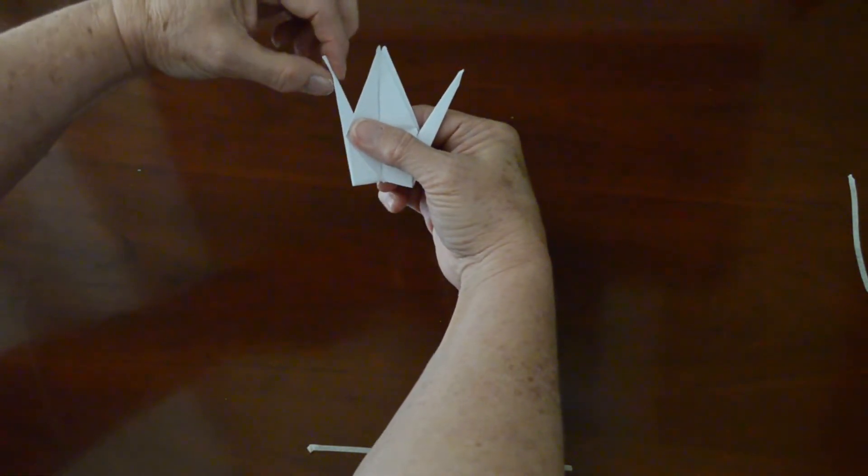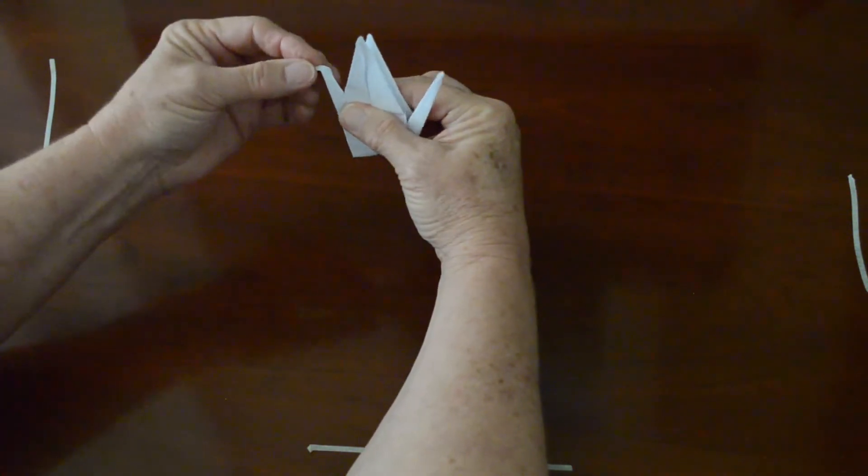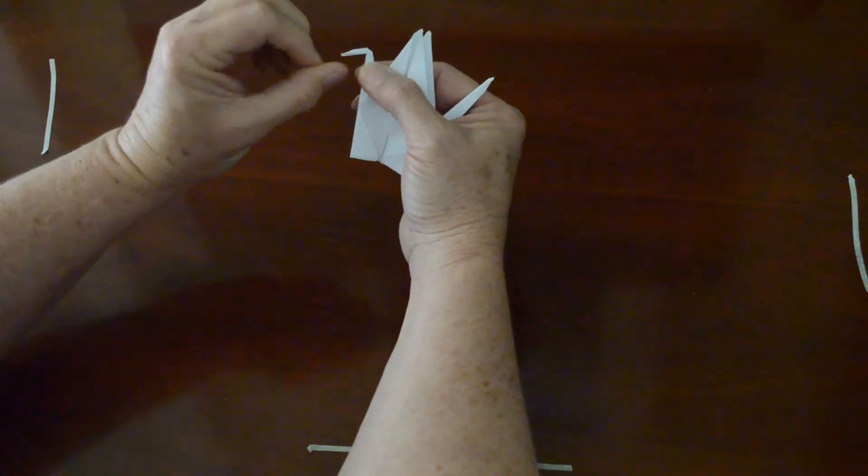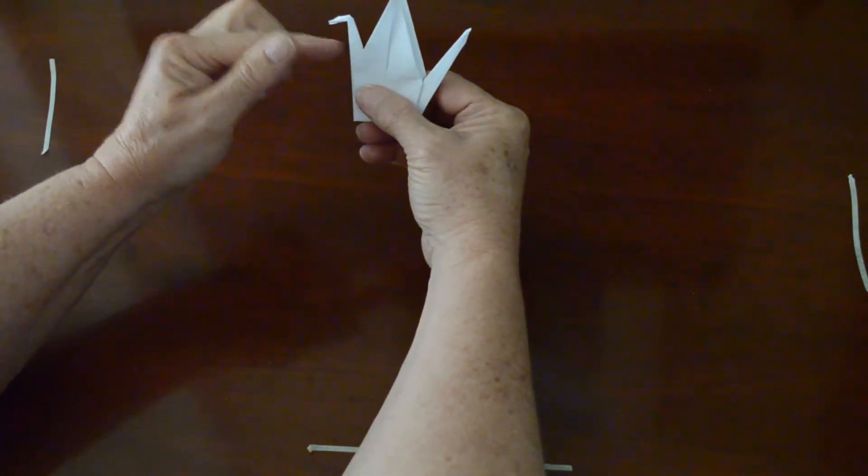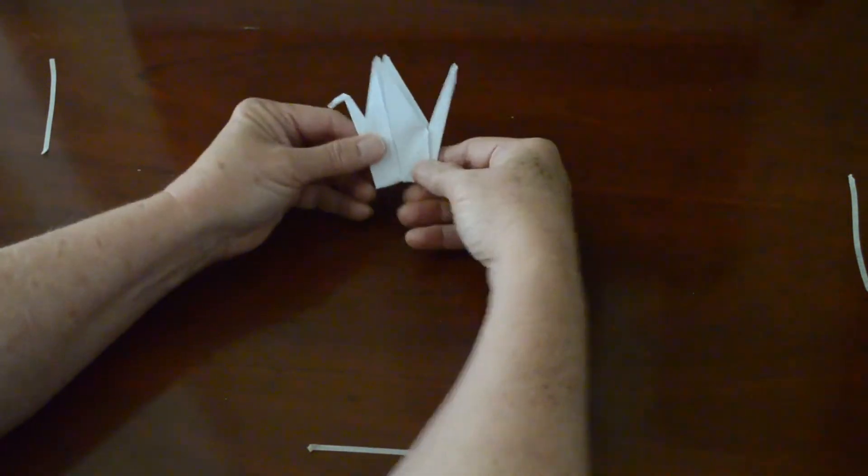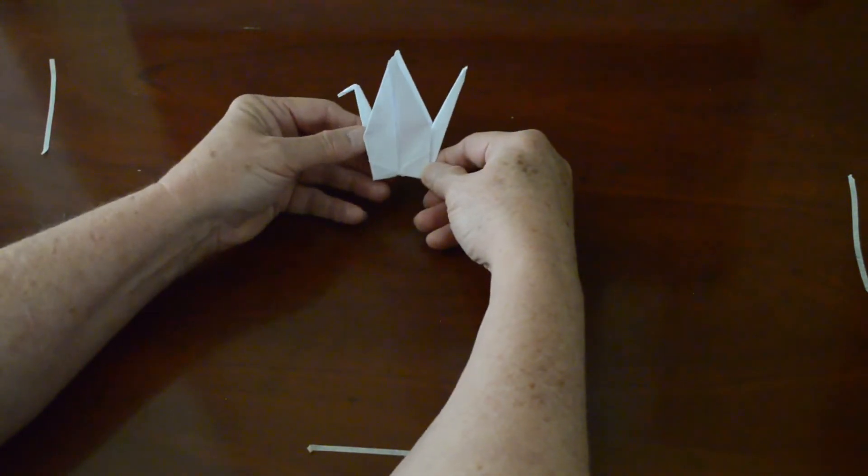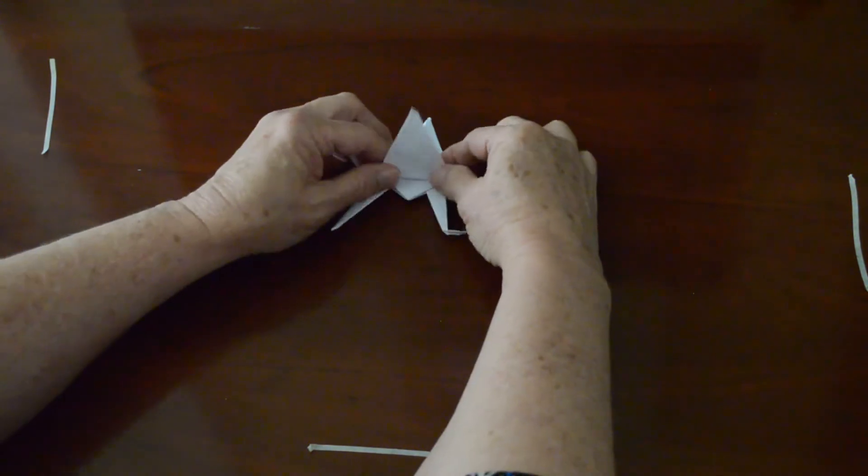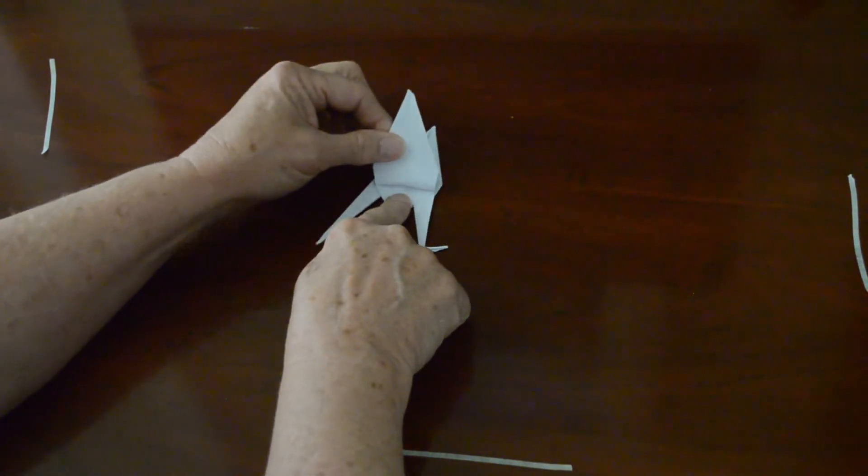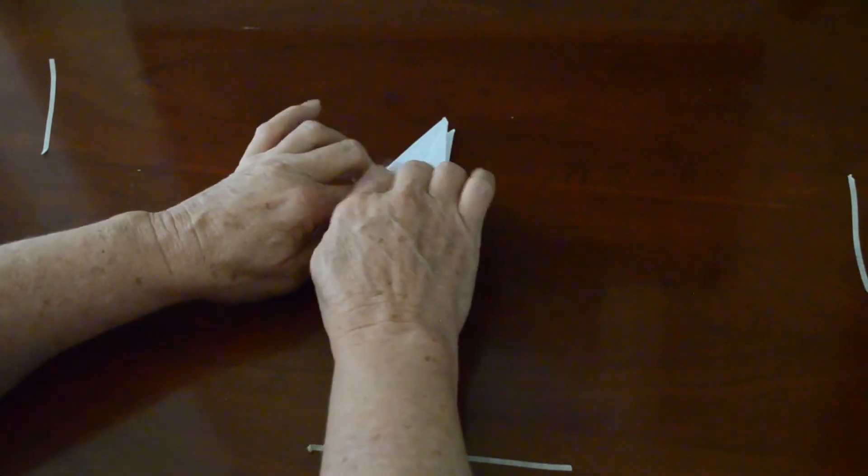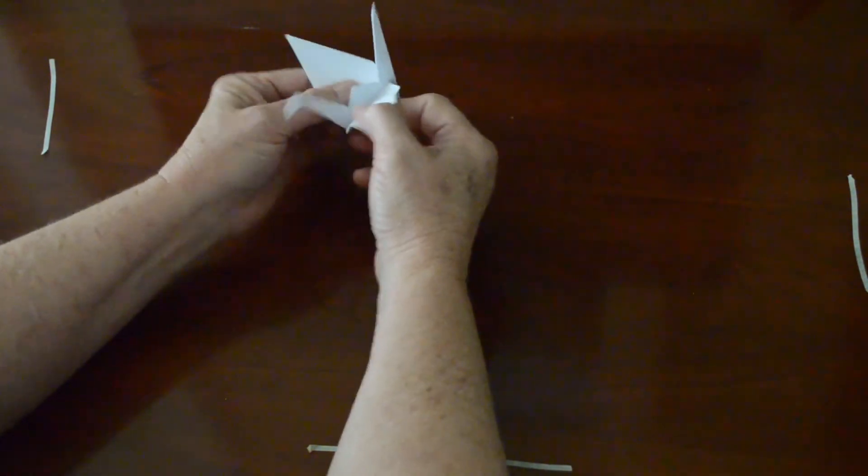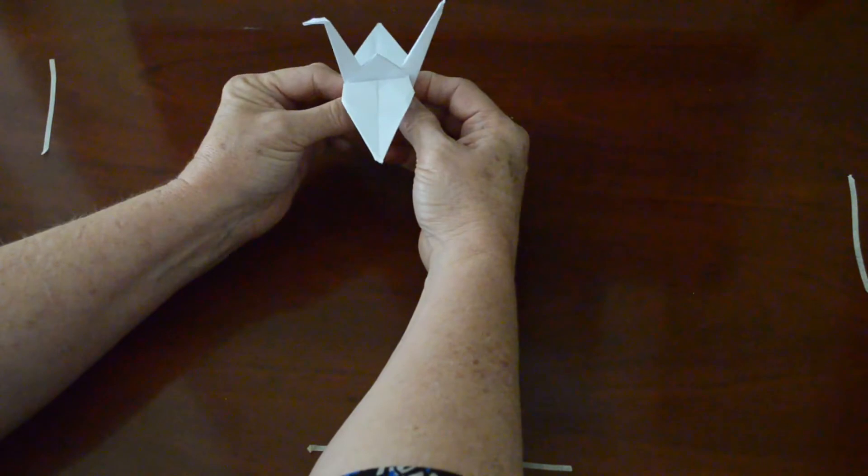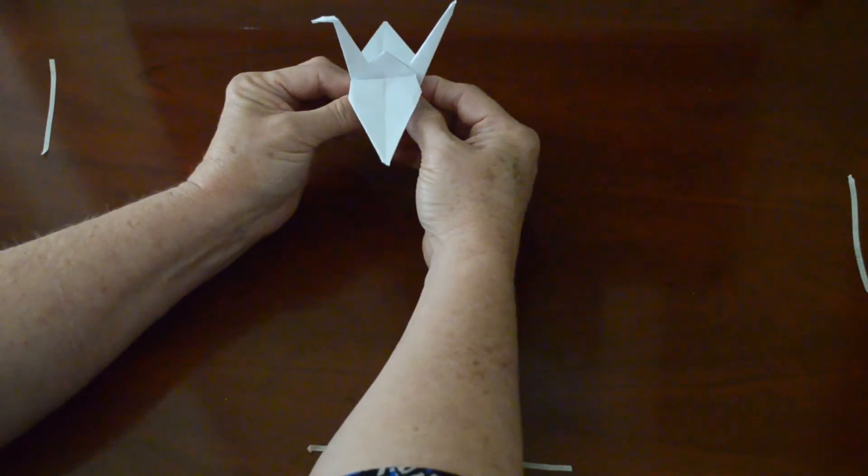And then we're going to take this top bit and push it and fold right there. And that's going to make its beak. You can make it long, really long if you folded it down here. Really short if you folded it up there. And then we're going to just fold these wings down on each side. Flip it over. Fold that down. And there you have it. You have your Japanese crane. Health and happiness. They say if you fold a thousand of them, you'll get your heart's desire.